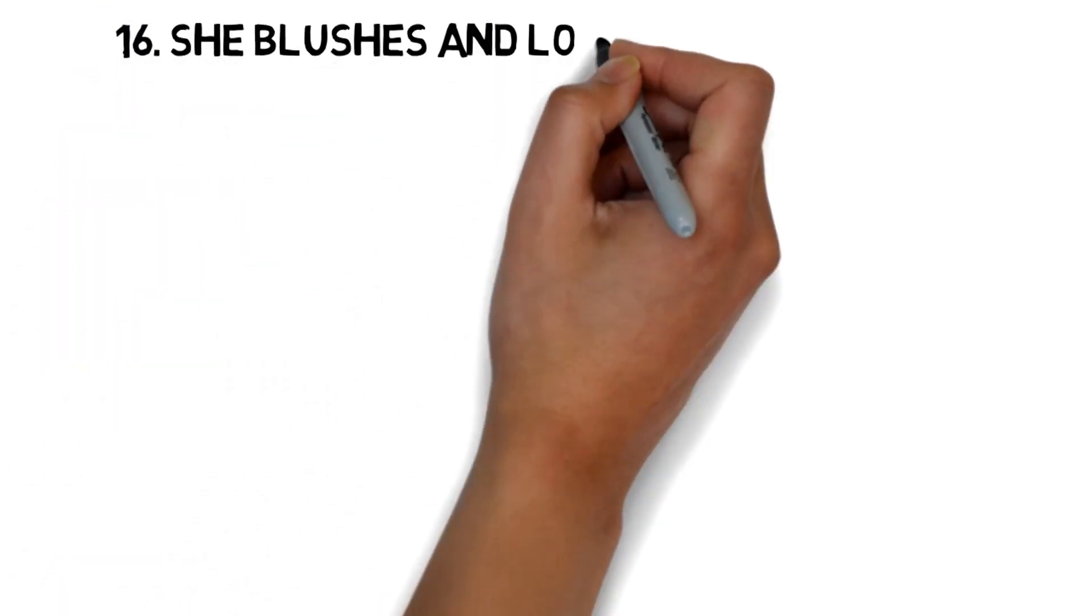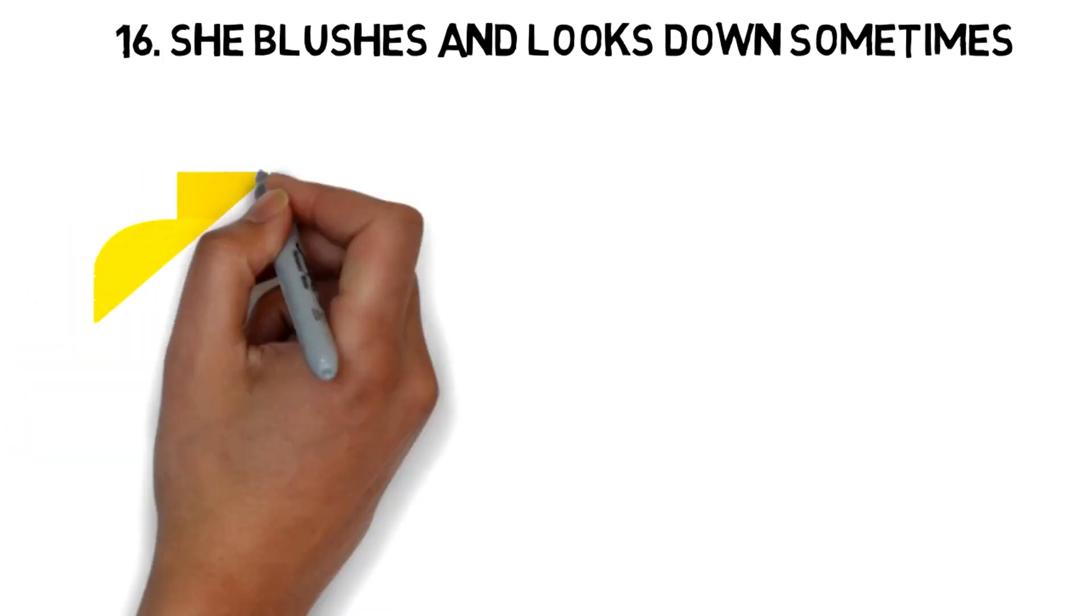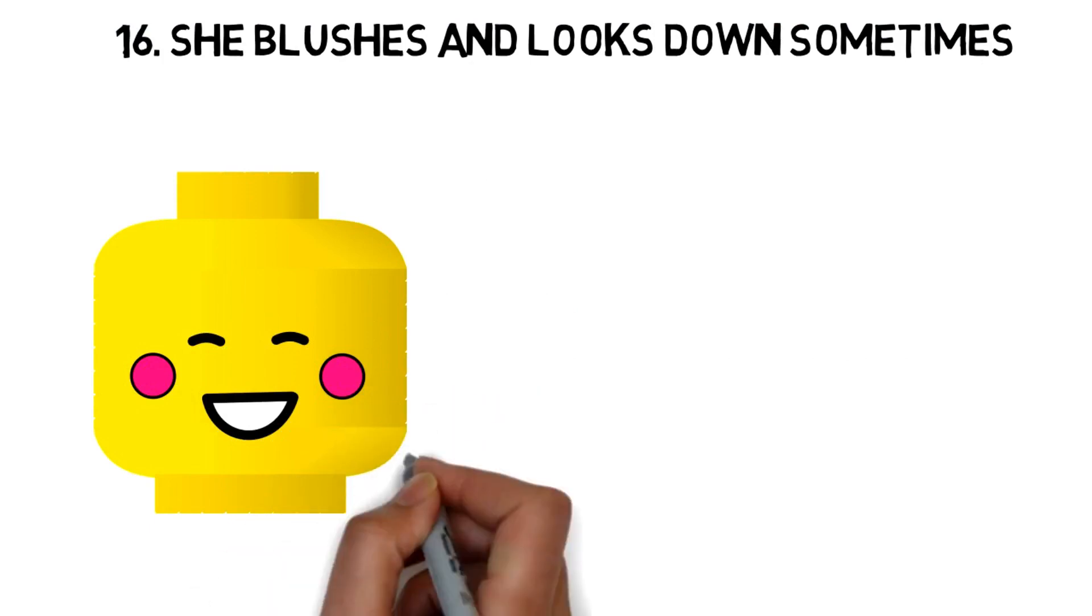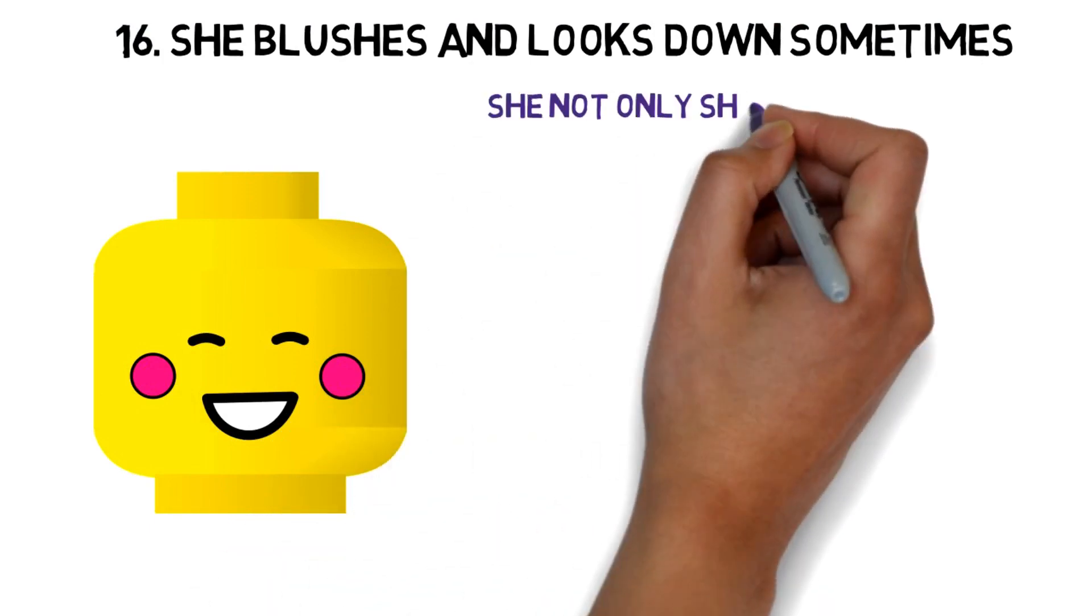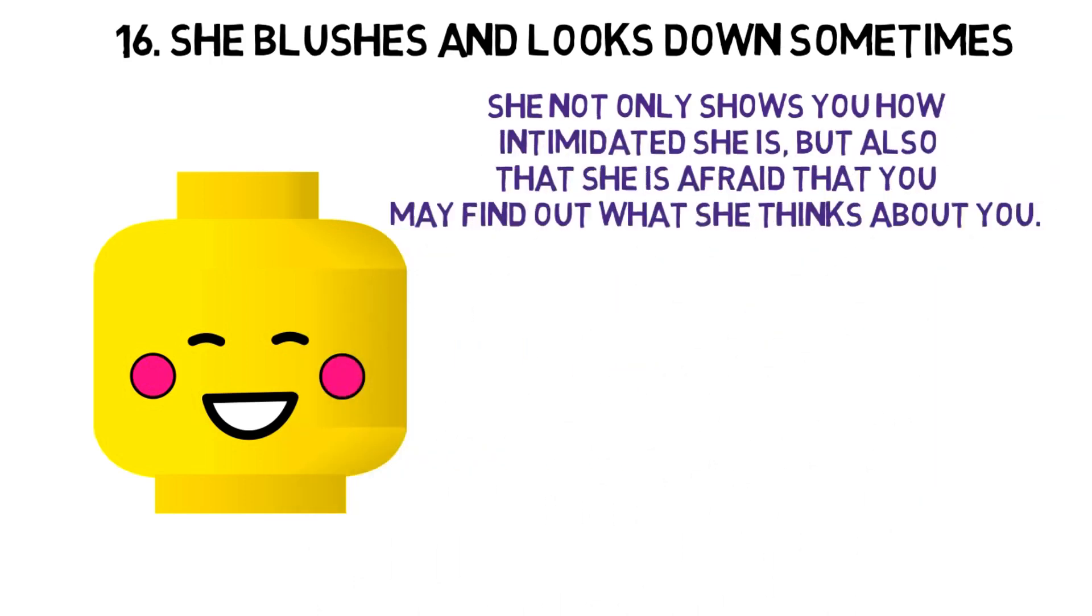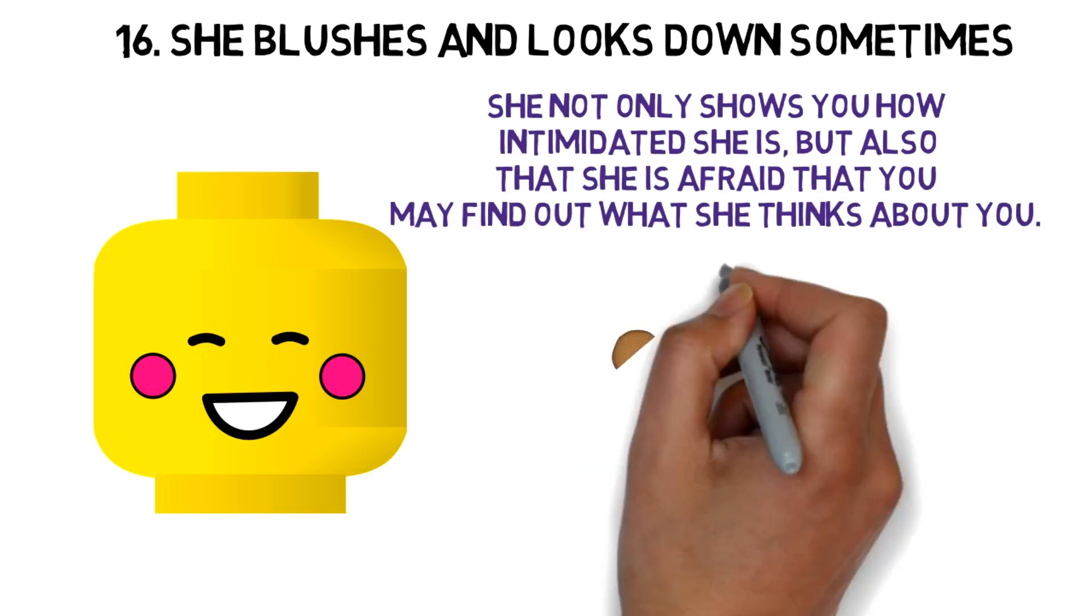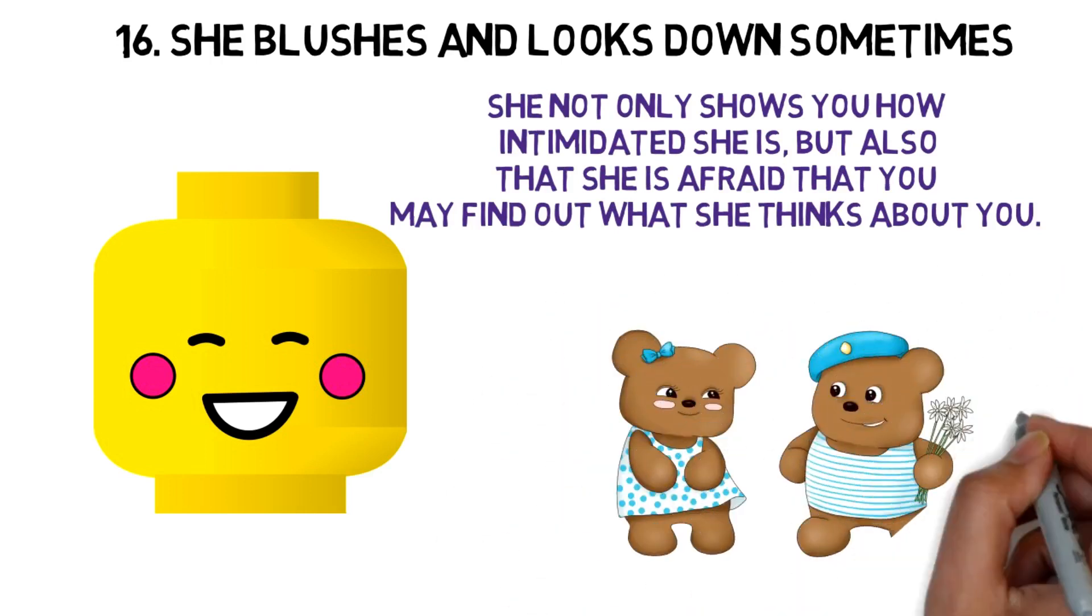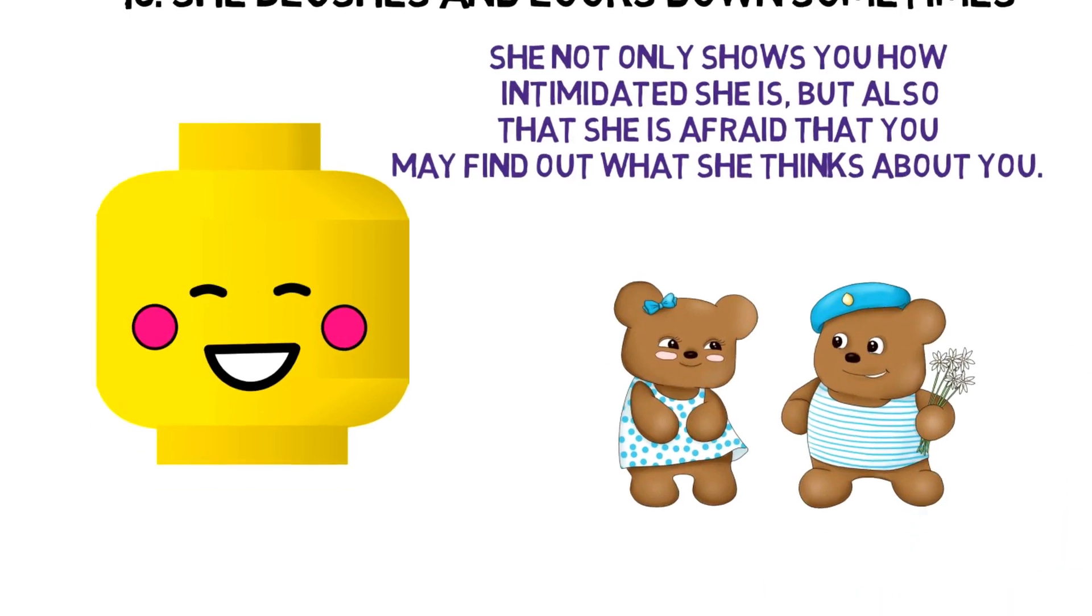16. She blushes and looks down sometimes. When your eyes meet, you may have noticed that she tends to blush and often looks down quickly. This is an indisputable sign that she is attracted to you. In fact, through this gesture, she not only shows you how intimidated she is, but also that she is afraid that you may find out what she thinks about you. Be careful though. Shy women tend to behave like that, but it doesn't necessarily reflect any kind of attraction, so be sure to analyze her behavior by taking her personality into account.